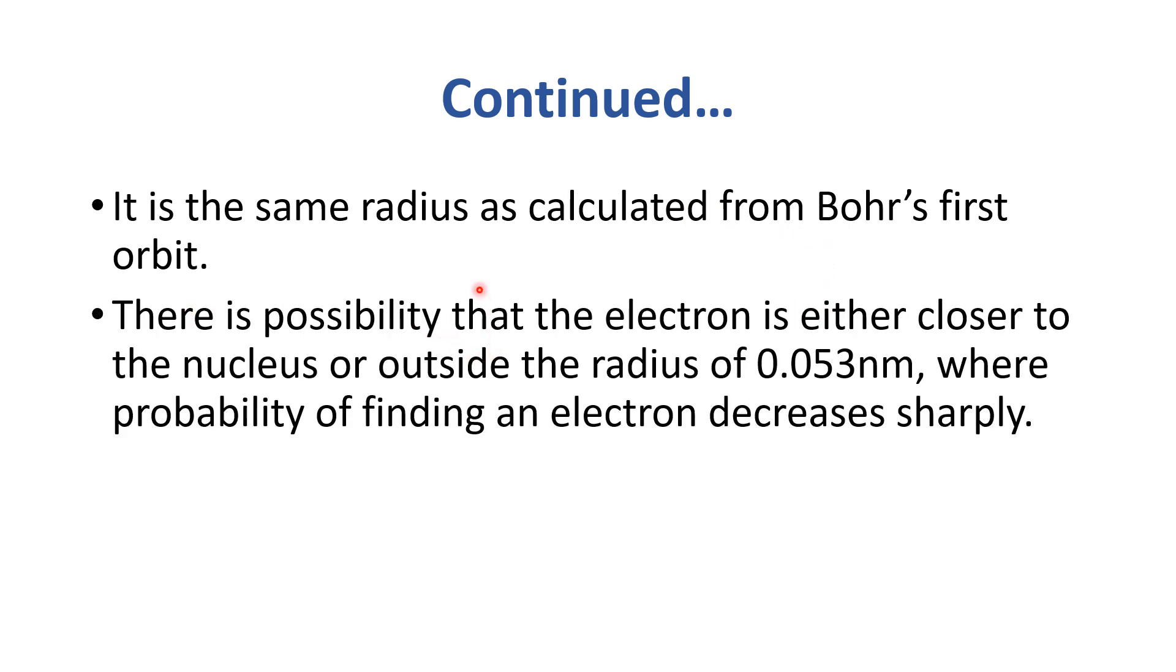There is possibility that the electron is either closer to the nucleus or outside the radius of 0.053 nm where probability of finding an electron decreases sharply. The closer the distance to the nucleus, there would be maximum probability of finding electron.